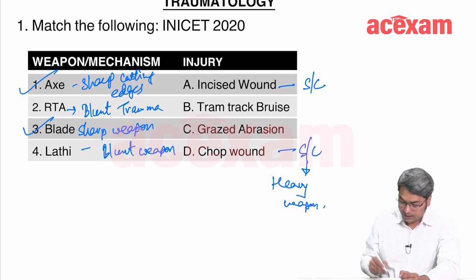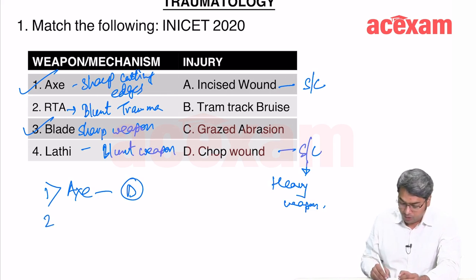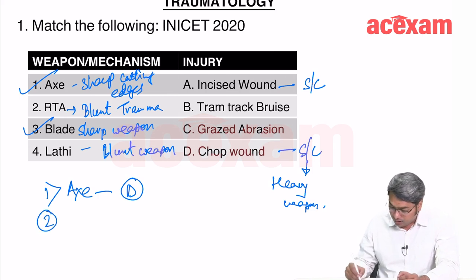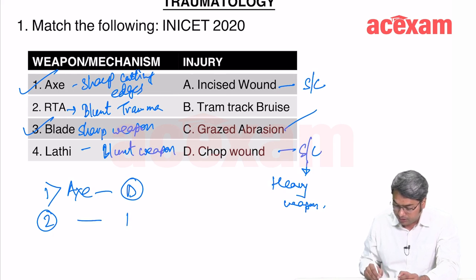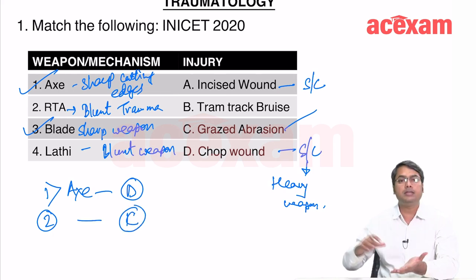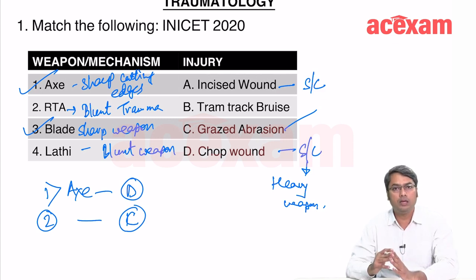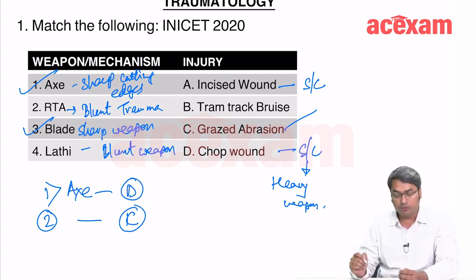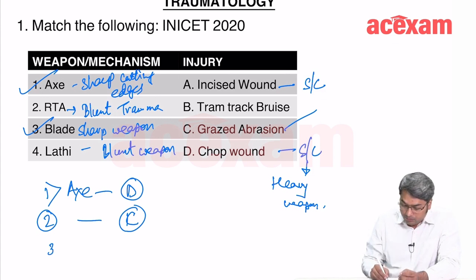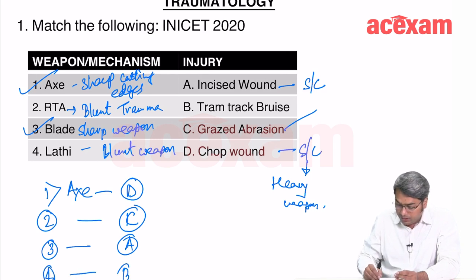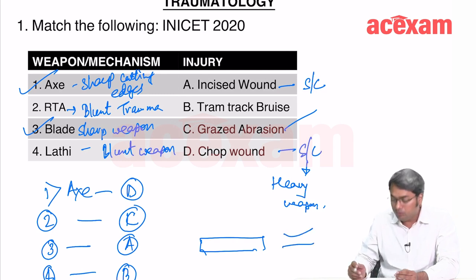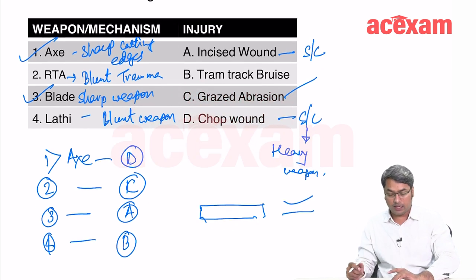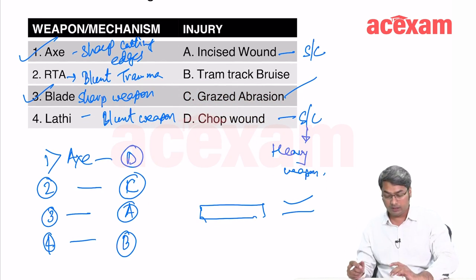So axe produces chop wound (D), RTA produces grazed abrasion (C) — where the body grazes on the surface, a type of secondary injury. Blade produces an incised wound (A), and lathe produces a tram track bruise (B), where we see two parallel bruises. The answer is 1-D, 2-C, 3-A, 4-B.